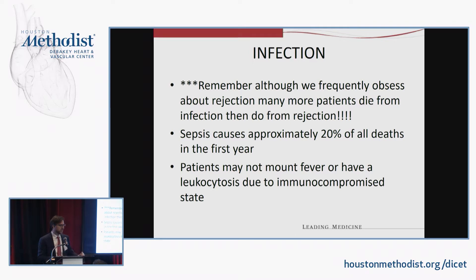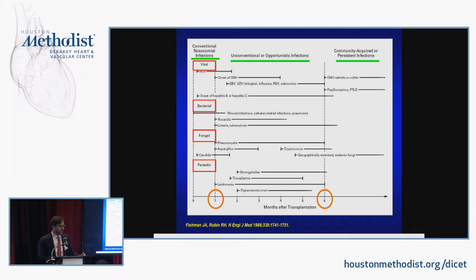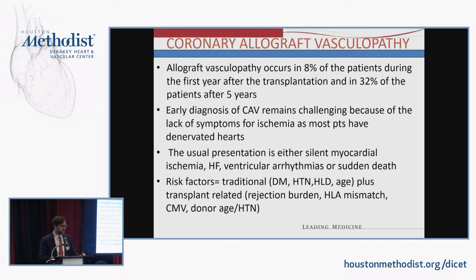Remember, more patients die of infection than rejection. Sepsis causes about 20% of all deaths in the first year. Since these patients are immunocompromised, they may not mount a fever or leukocytosis. The infection timeline: in the first month, more common nosocomial infections. Between one and six months, atypical infections — nocardia, aspergillus, and CMV. Beyond six months, similar to an HIV patient with a normal count, common infections predominate over opportunistic ones.